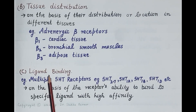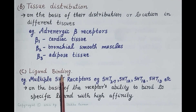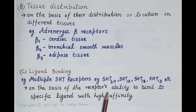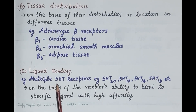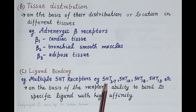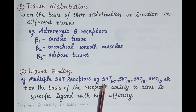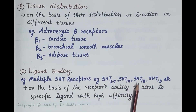The third criterion is ligand binding. Receptors are classified based on the ability of a receptor to bind to a specific ligand with high affinity. Multiple serotonin (5-hydroxytryptamine) receptors have been classified on this basis — for example, 5-HT1, 5-HT2, 5-HT3, 5-HT5, 5-HT6, and 5-HT7 receptors, and further subclassified as 5-HT1A, 5-HT1B, 5-HT1D receptors, etc.